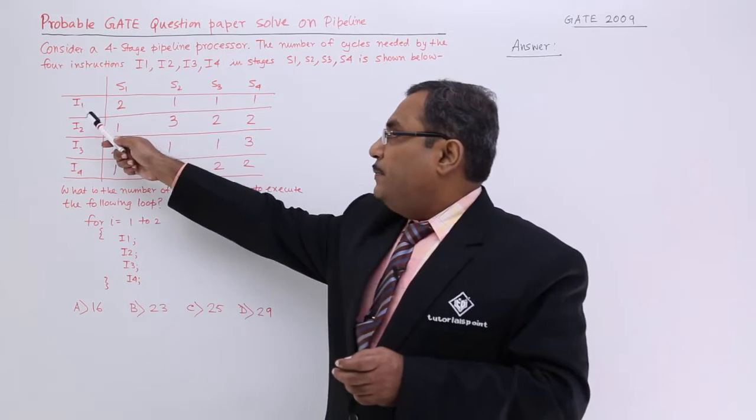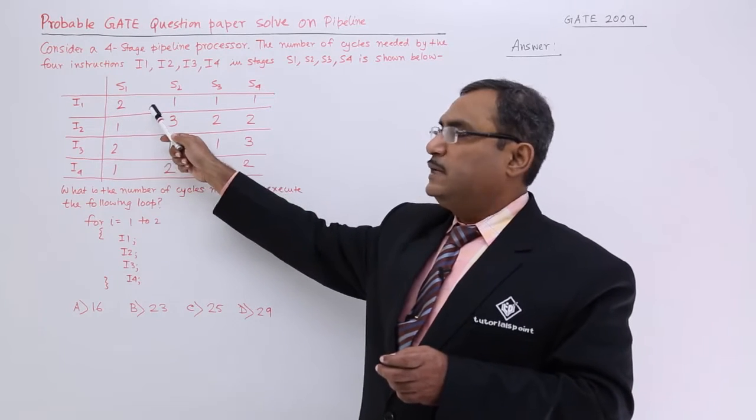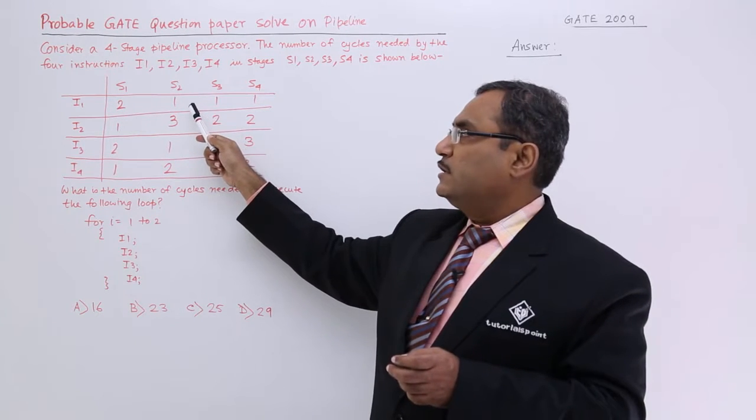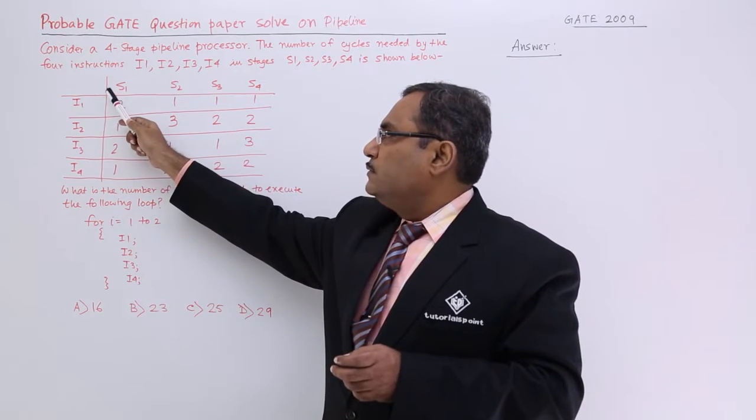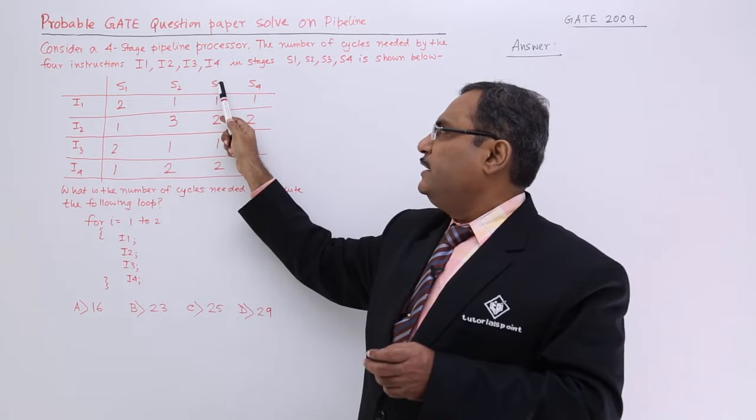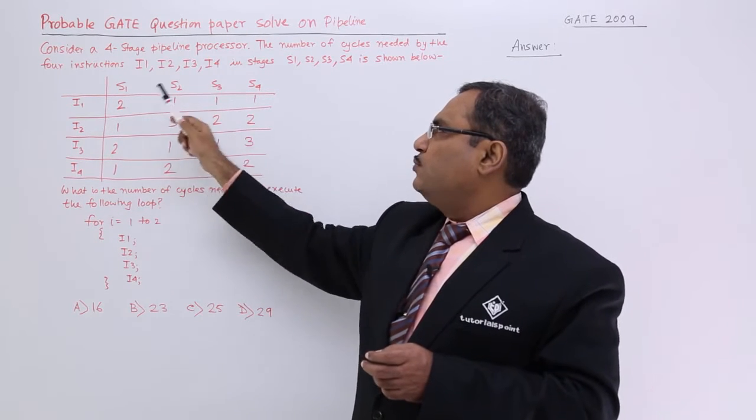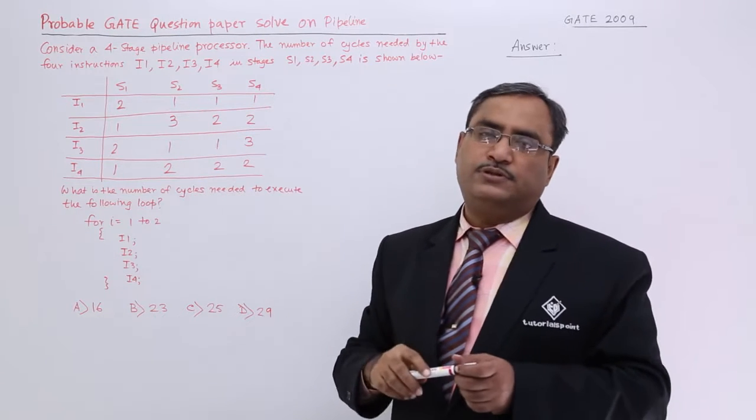Now we are having I1, I2, I3, I4, and S1, S2, S3, S4, and these are the respective cycles per instruction per segment or phase. I1 for S1 segment is 2, I1 for phase 2 is 1, I1 for phase 3 or segment 3 is 1, I1 for segment 4 is 1. In this way we are having this 4-stage pipeline.